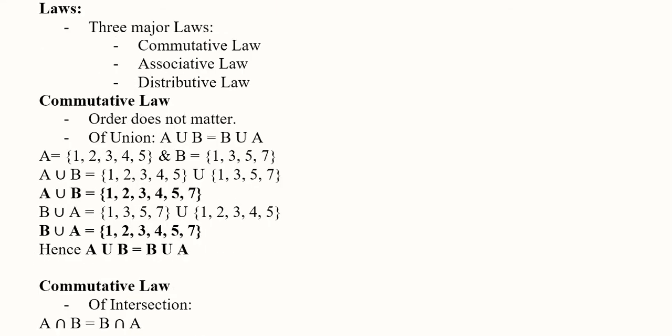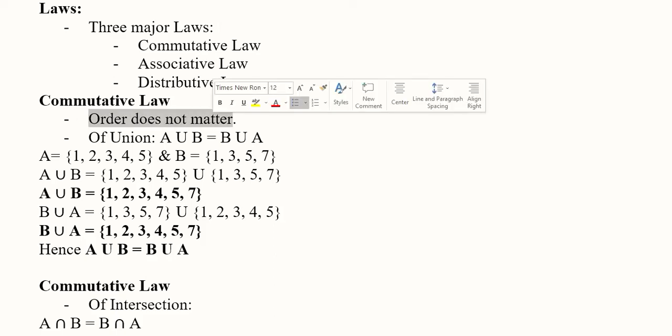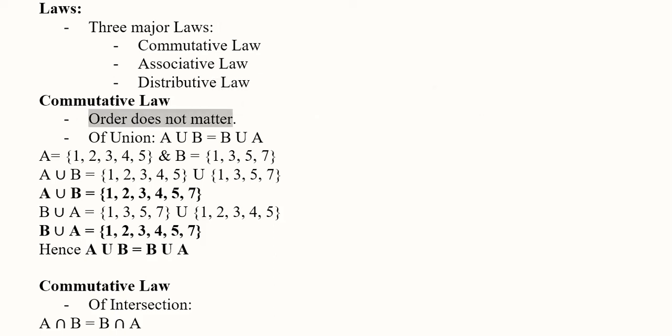The first one is the commutative law, which states that order does not matter when it comes to union as well as intersection. This law holds true for both operations.